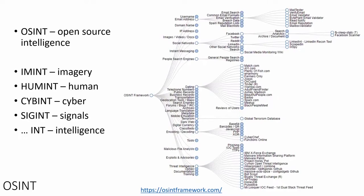For cyber intelligence you have some joint coverage with OSINT, and another part involves perhaps hacking into systems or getting access to systems you are not supposed to access. Signals intelligence can be different signals — radio, thermal, satellite imagery, et cetera. There are different types of intelligence, but what we are going to talk about today is open source intelligence.